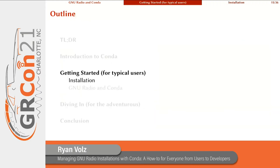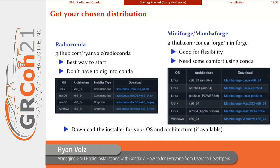Now you know what conda is, so in this next section we're going to talk about how to get started using conda with GNU Radio. The first step is to download a distribution so you can get started using the conda command. I think the best way to start is to use Radio Conda because that'll have most of what you need. But if you want more flexibility, I recommend the Miniforge or Mambaforge distributions. You'll go to either GitHub site and download the installer for your operating system and architecture. If that combination isn't available, seek me out and we can talk about making it available.